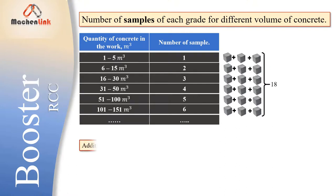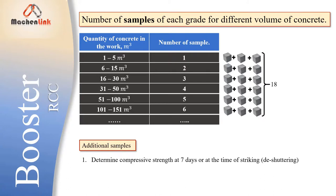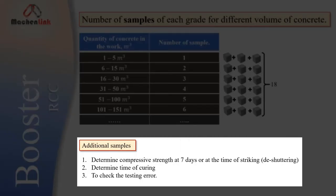Except these samples you may take additional samples also. The purpose of these additional samples such as to determine compressive strength at 7 days, or at the time of striking or de-shuttering when we remove from work, and to determine the time of curing, and to check the testing error. These samples are optional and sometimes may be required.